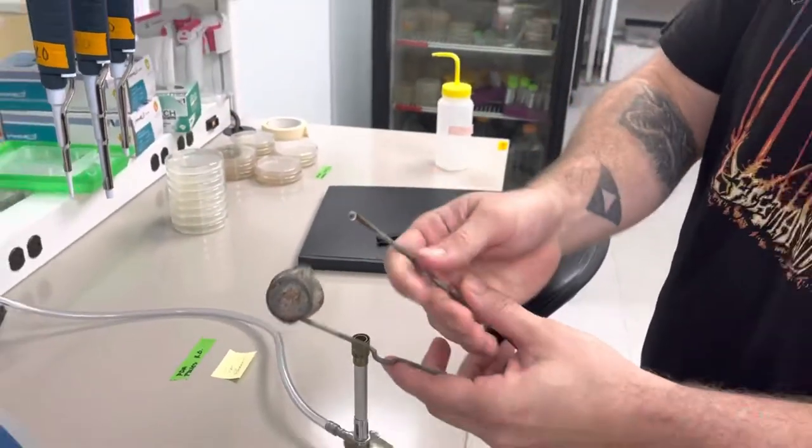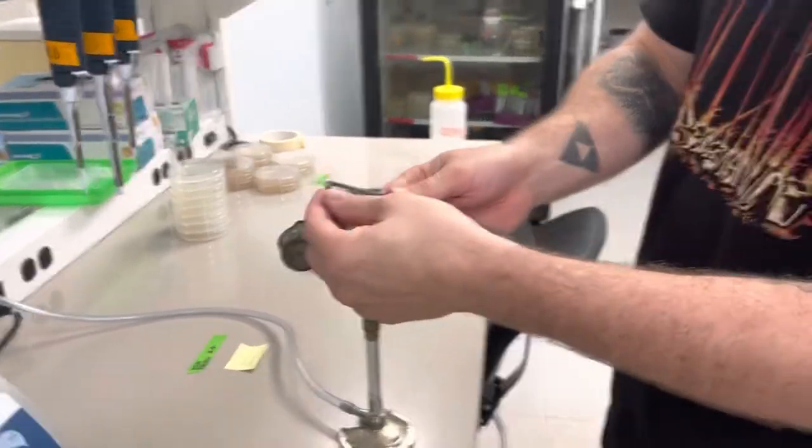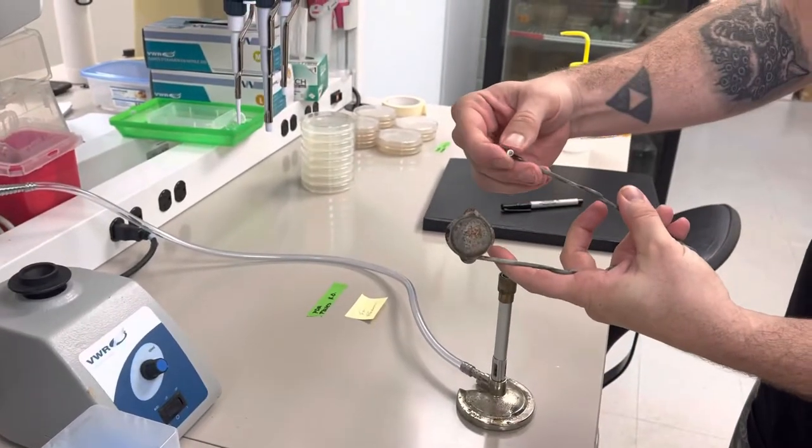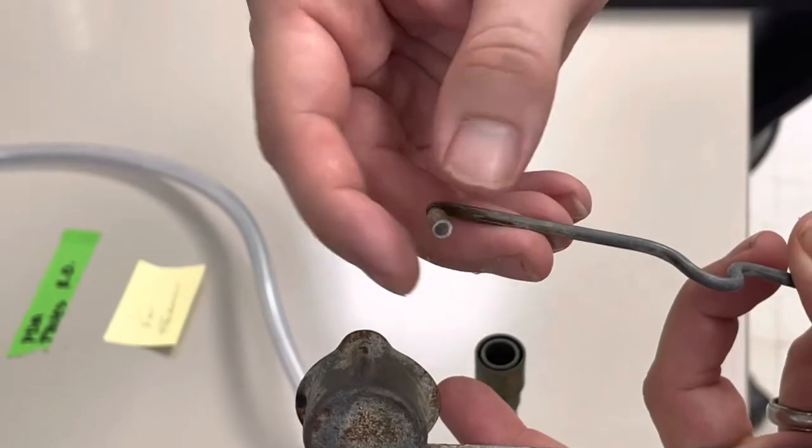The flint wears down, so in order to fix this you have to change the flint. This just unscrews. You can just twist this. It literally just unscrews and you pull it off. You throw that away.